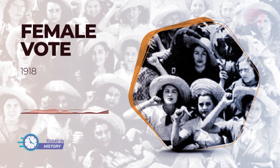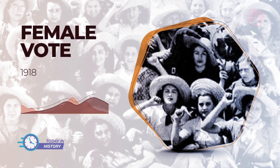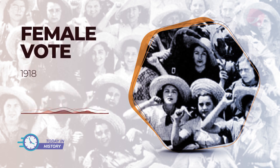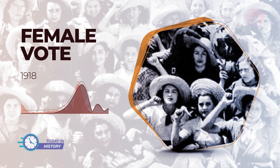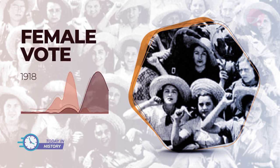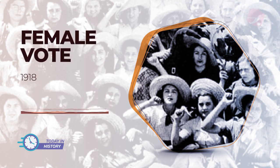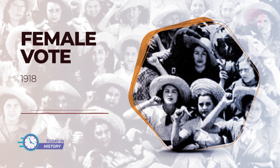An opponent of Robespierre, she ended up on the guillotine. In 1792, the writer Mary Wollstonecraft published in England the essay A Defense of the Rights of Women, considered a precursor of feminism.